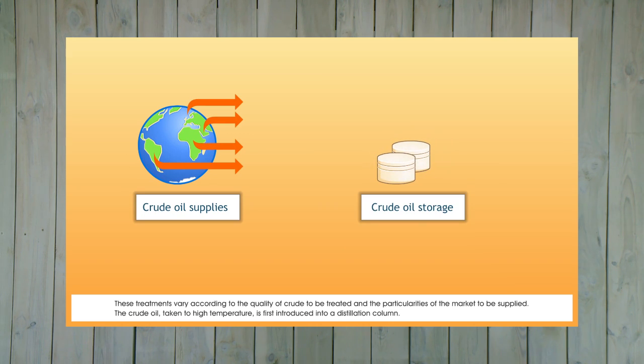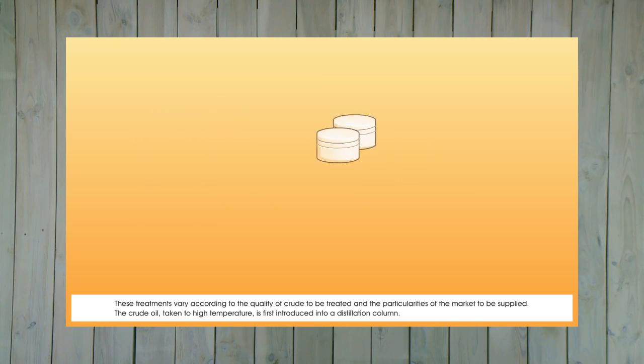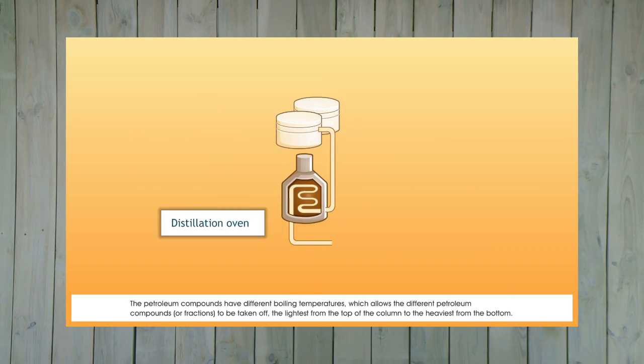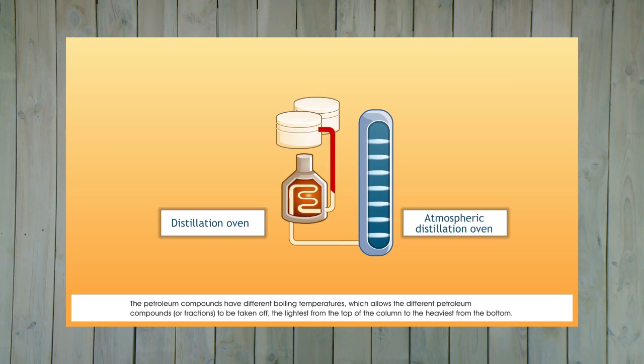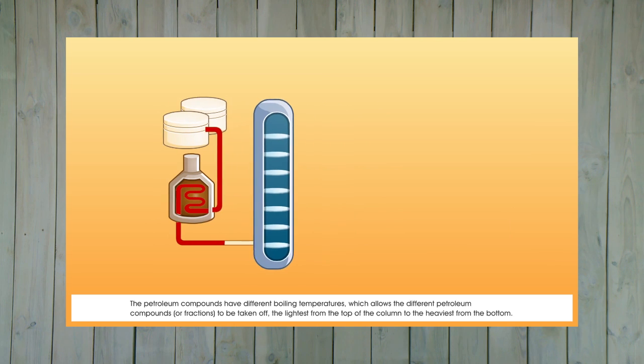The crude oil, taken to high temperature, is first introduced into a distillation column. The petroleum compounds have different boiling temperatures, which allows the different petroleum compounds, or fractions, to be taken off. The lightest from the top of the column to the heaviest from the bottom.